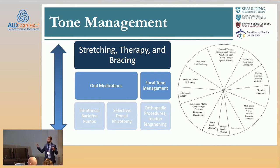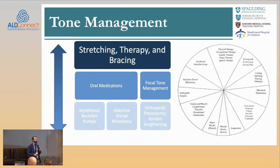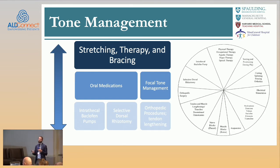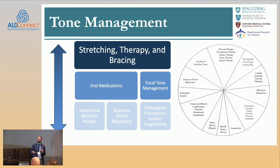So what can we do? I talk about tone management in sort of a spectrum. Our bread and butter — what we should be using every day — is stretching, bracing, and therapy. This is what's going to keep us moving forward. Everything else is just to augment our therapy programs, our stretching programs, and any bracing. Bracing can be for weakness or for positioning to increase the amount of stretching. If you stretch three times a day for ten minutes each time, that's good — but if we put a nighttime stretching brace on for eight hours, that's eight times what you were doing. This is our basis and most important component.